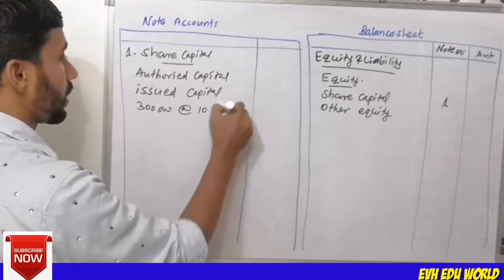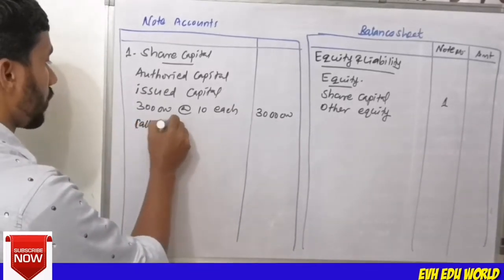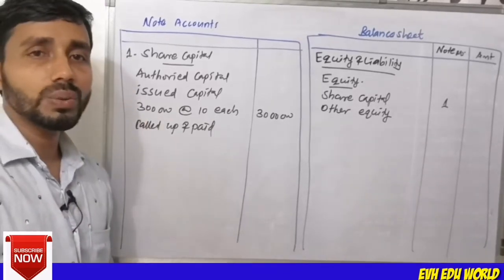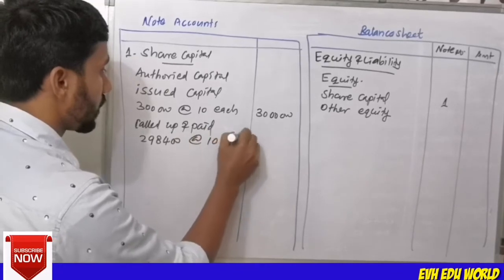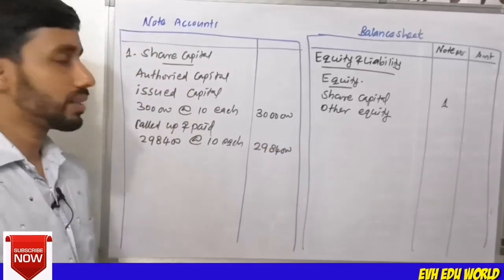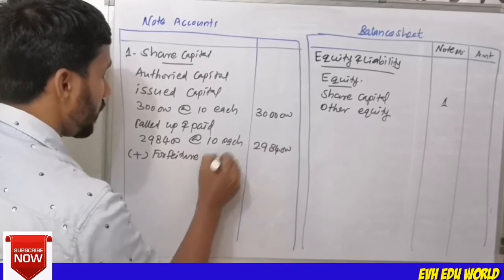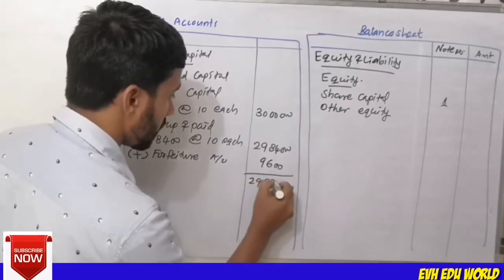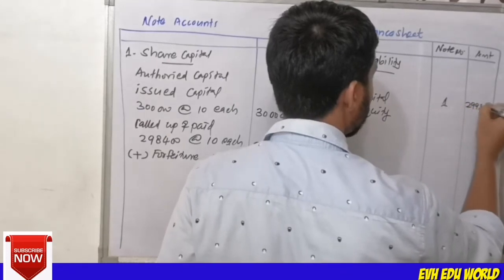Issued capital is Rs.30,00,000. Called up and paid up capital: total shares issued were 3 lakh, but 1,600 shares were forfeited, so called up shares are 2,98,400 shares. At Rs.10 each, that is Rs.29,84,000. Adding the share forfeiture account amount, the share capital figure is Rs.29,36,000.